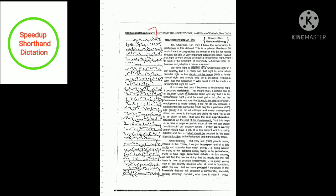Why could it not be made a fundamental right till now? It is known that once it becomes a fundamental right, it becomes justiciable. That means that a person can go to the high court or supreme court and say that